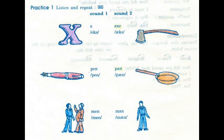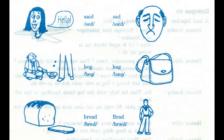Contrast pairs: x / axe, pen / pan, men / man, said / sad, beg / bag, bread / Brad.